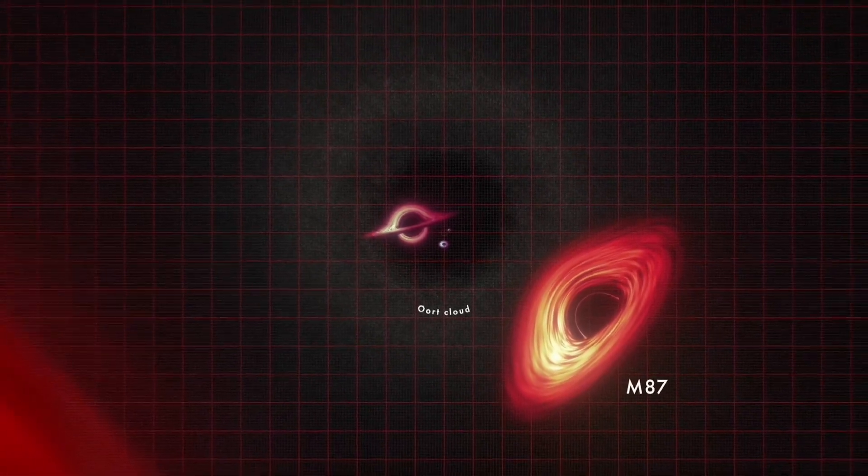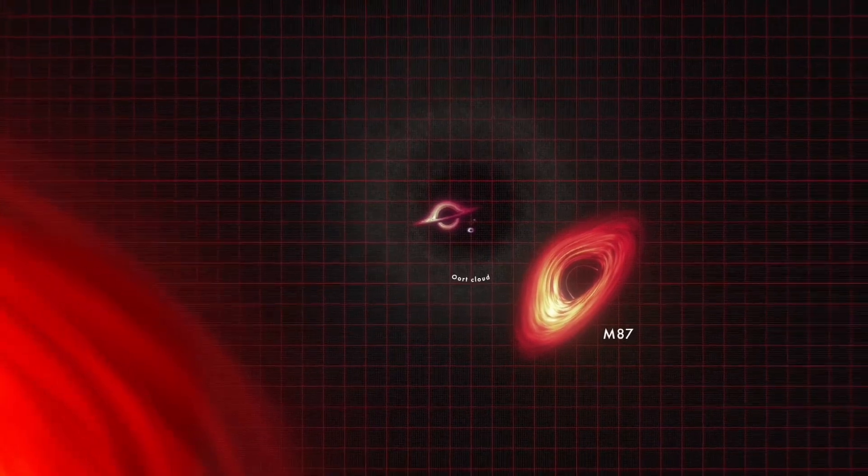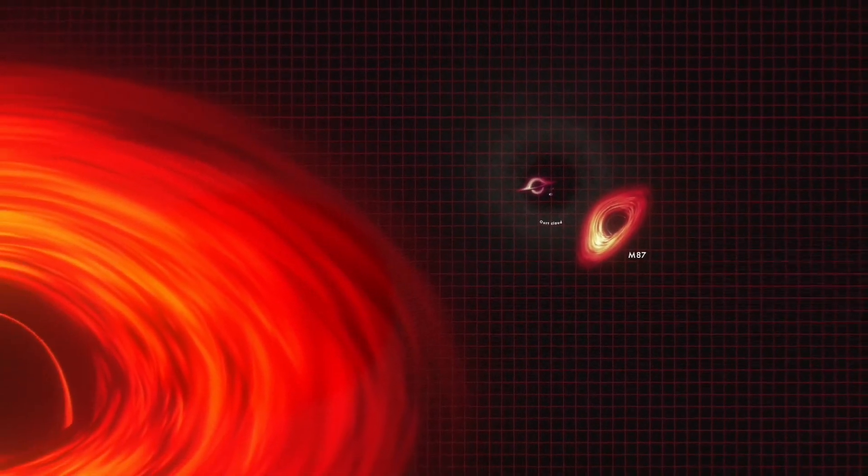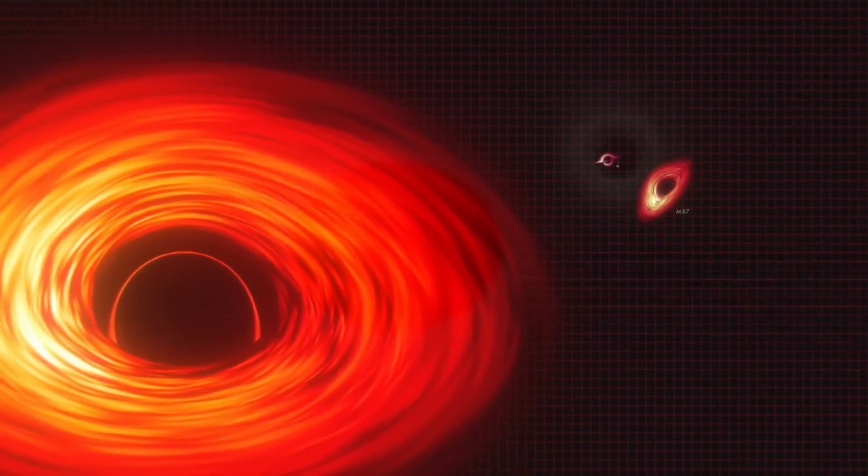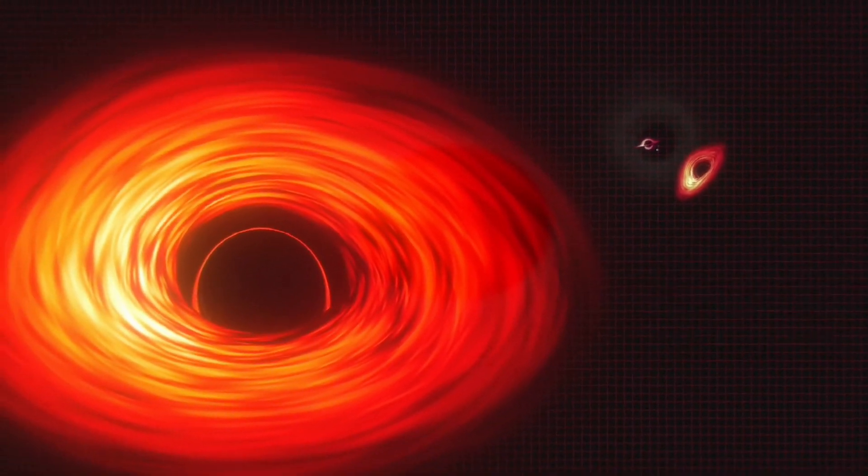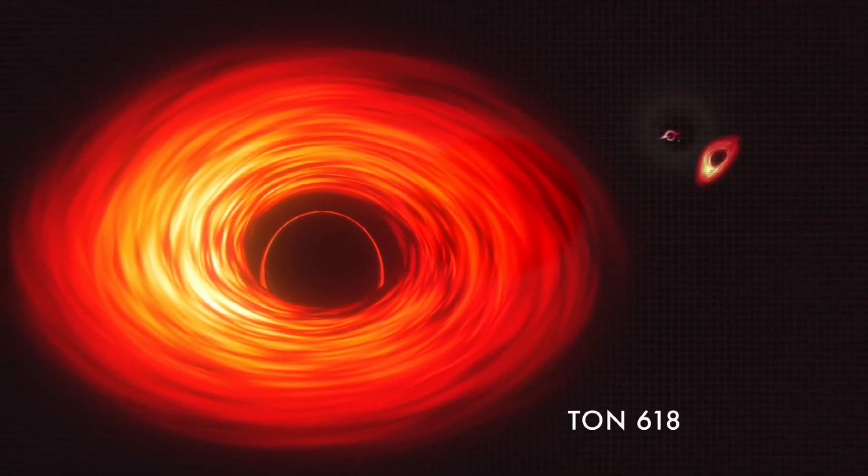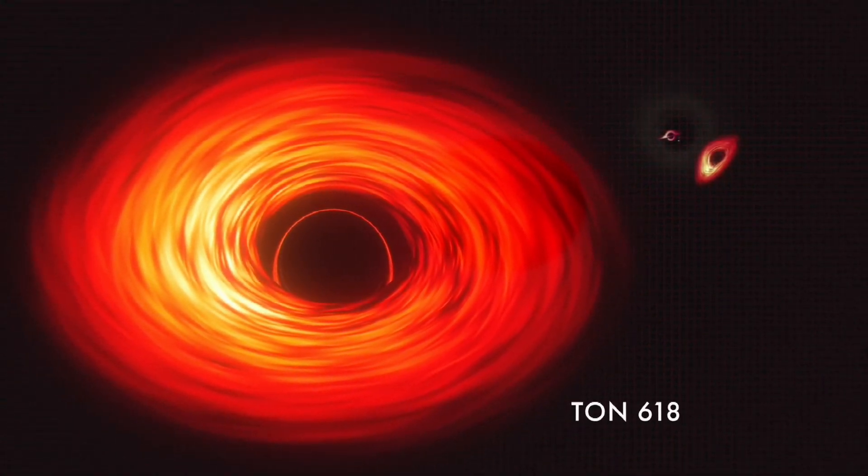Concluding the animation is a glimpse of TON 618, which is among the very distant and massive black holes for which astronomers possess direct measurements. This colossal entity has a mass exceeding 60 billion solar masses and possesses a shadow of such vast proportions that a beam of light would require weeks to cross it.